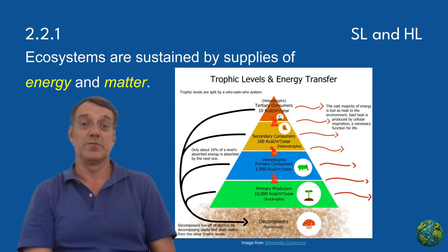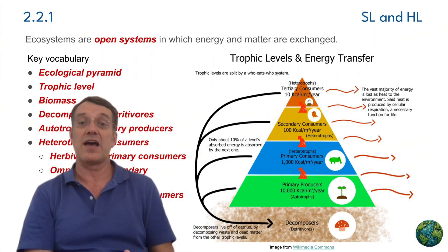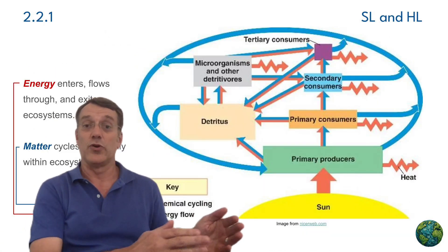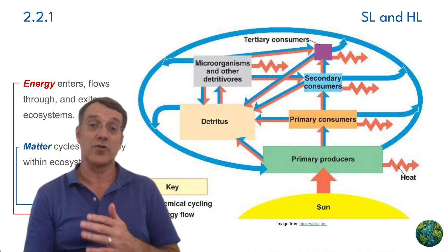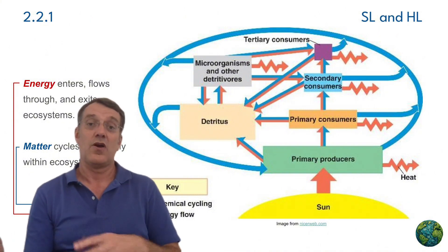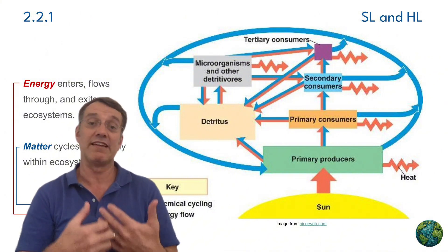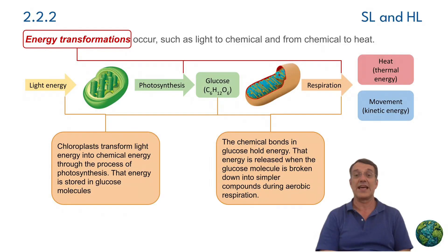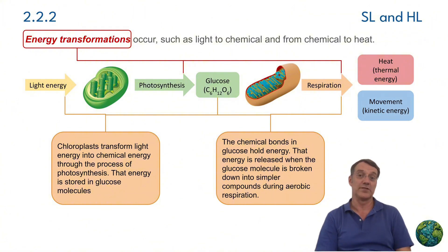Ecosystems are open systems, which means both energy and matter can move in and out. Energy flows through ecosystems in one direction, while matter cycles repeatedly within ecosystems. This fundamental concept is governed by the first law of thermodynamics, which states that energy can be transformed from one type into another, but it cannot be created or destroyed.